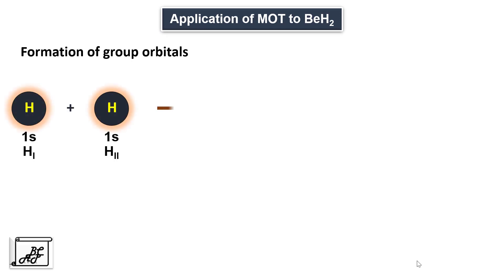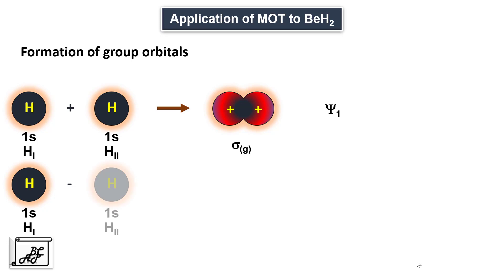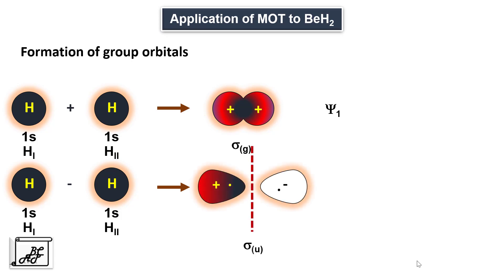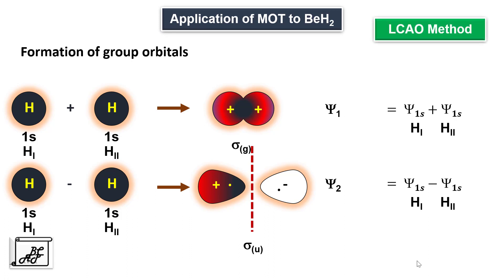The peripheral atoms first combine with each other to form the group orbitals. As simple molecular orbital theory says, when two atomic orbitals combine, two molecular orbitals are formed — one bonding and one antibonding. Here, the 1s orbital of one hydrogen atom combines with the 1s orbital of the other hydrogen atom. The addition gives the bonding group orbital ψ1, which is gerade, and the subtraction gives the antibonding group orbital ψ2, which is ungerade. Therefore we have two group orbitals: ψ1 formed by addition and ψ2 formed by subtraction. This method is called LCAO — linear combination of atomic orbitals.